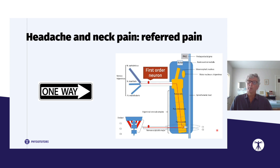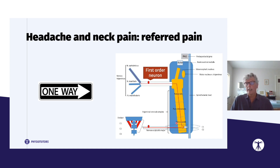The model describes how afferent information is transferred towards the trigeminal cervical nucleus. This is the trigeminal cervical complex within the midbrain, divided into three parts: the pars oralis, the pars interpolaris, and the pars caudalis. For headache and tension-type headache, this lower part — the pars caudalis — is very important, as all afferent information from first-order neurons is transferred to it. The pars caudalis is located at the dorsal horn of C1 and C2.